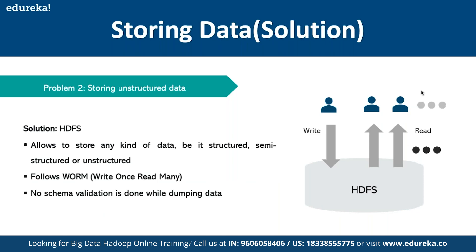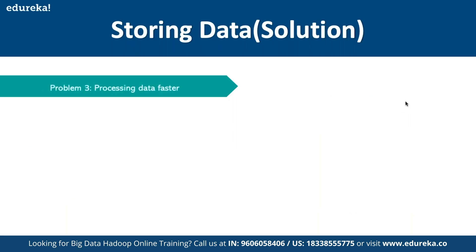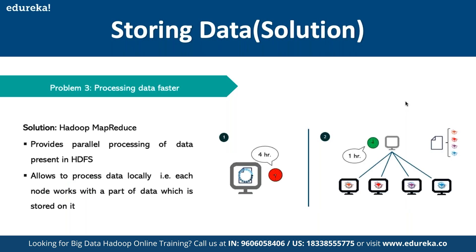For the second problem of storing unstructured data, HDFS allows us to store any kind of data — structured, semi-structured, or unstructured. It follows the WORM theory: Write Once Read Many. No schema validation is done while dumping the data, and multiple read operations can be performed on data written to HDFS. For the third problem of processing data faster, MapReduce provides parallel processing of data in HDFS.